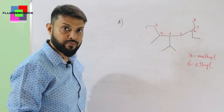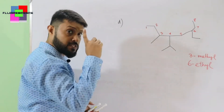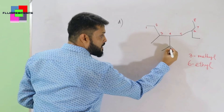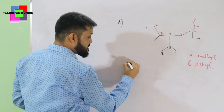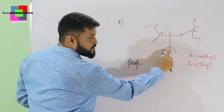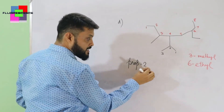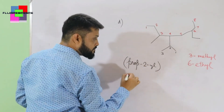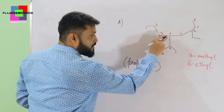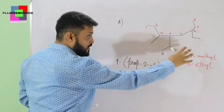From position four, you can see a group coming out. There are two procedures for naming it. In the first process, count the total number of carbons present: one, two, three — which makes 'prop'. This prop is connected to the main chain by position two, so it becomes 'prop-2-yl'. This entire bulk is connected to the main chain through position four, so it is '4-prop-2-yl'.